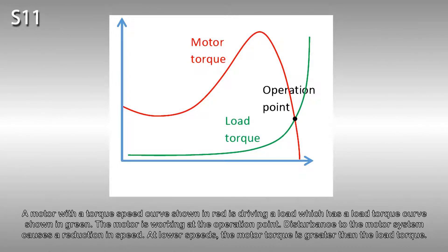A motor with a torque speed curve shown in red is driving a load which has a load torque curve shown in green. The motor is working at the operation point. Disturbance to the motor system causes a reduction in speed. At lower speeds, the motor torque is greater than the load torque.